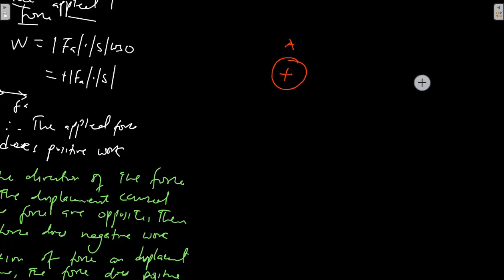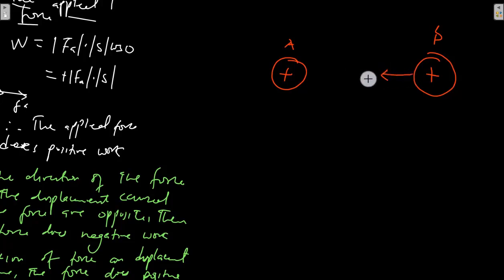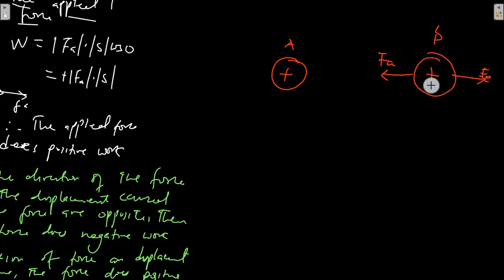Suppose we have a positive charge A and another positive charge B, which is also positive. Suppose we try to move the two charges together, so we are applying a certain force F_A to bring them together. But from the laws of electrostatics, the positive charge A and positive charge B will repel each other, so another force — the electrostatic force F_E — is opposing the motion. Let's examine which of these forces does positive and which does negative work.